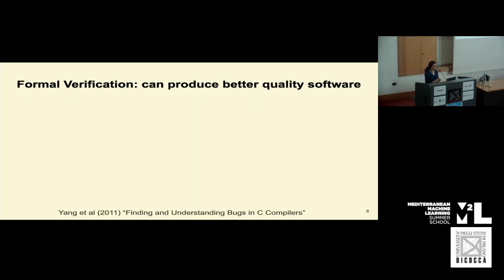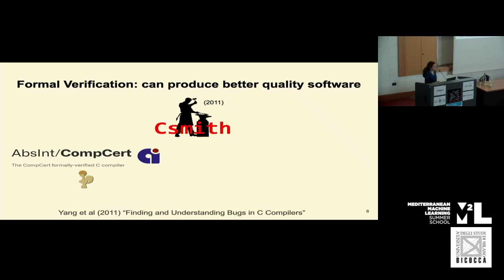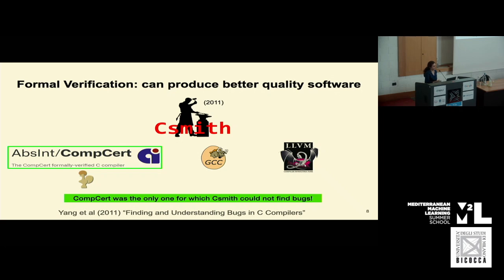With formal verification using proof assistants, it has been shown to actually work in terms of producing better quality software. In 2011, a project called CSmith tested three C compilers, the Coq-verified C compiler CompCert, and two industry standard compilers, GCC and LLVM. The project found that CompCert was the only one for which CSmith could not find any wrong code errors, so no bugs, which is a pretty cool result. The process of deeply thinking about your code and specs and proofs enables more bug-free code.